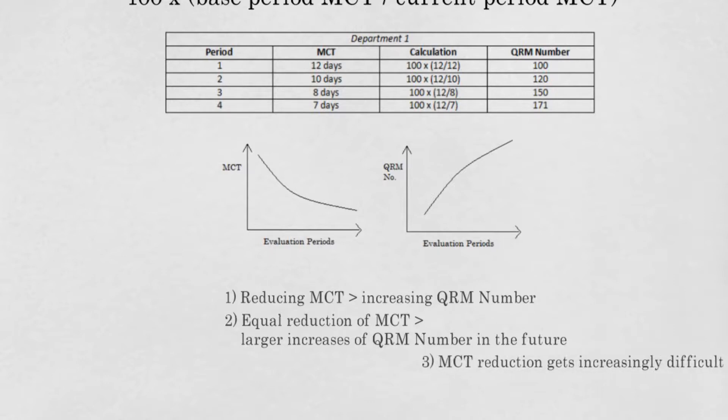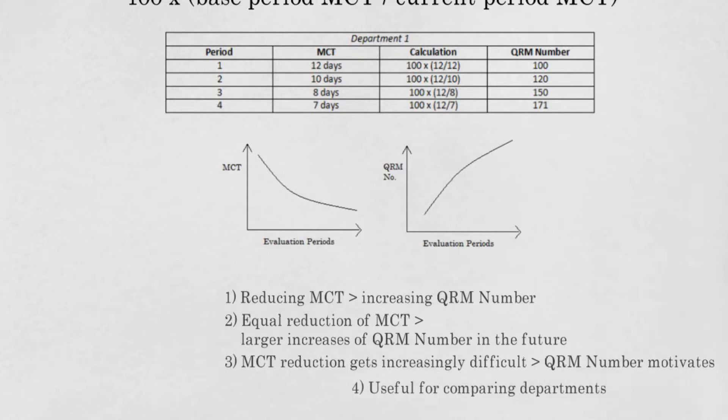Third, as MCT reduction get increasingly difficult, the QRM number continues to motivate teams. And finally, the QRM number provides a single measure that can be used through the organization regardless the type of work.